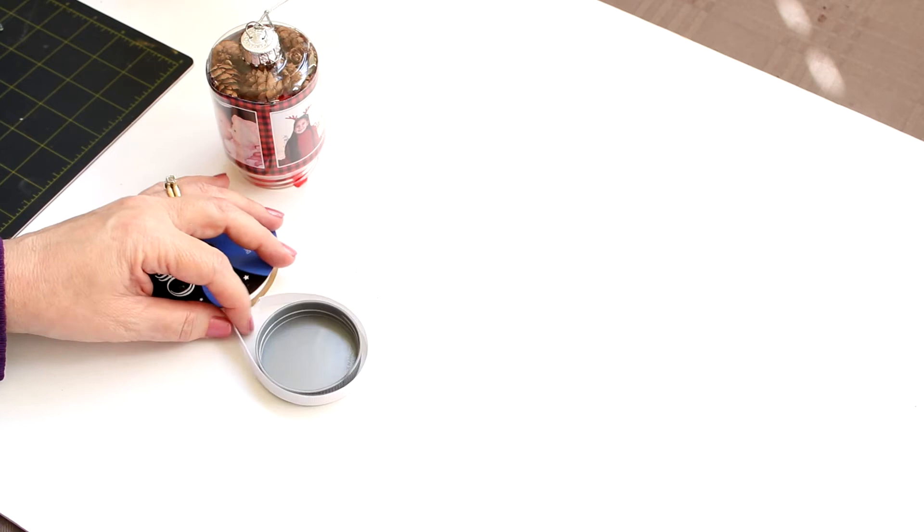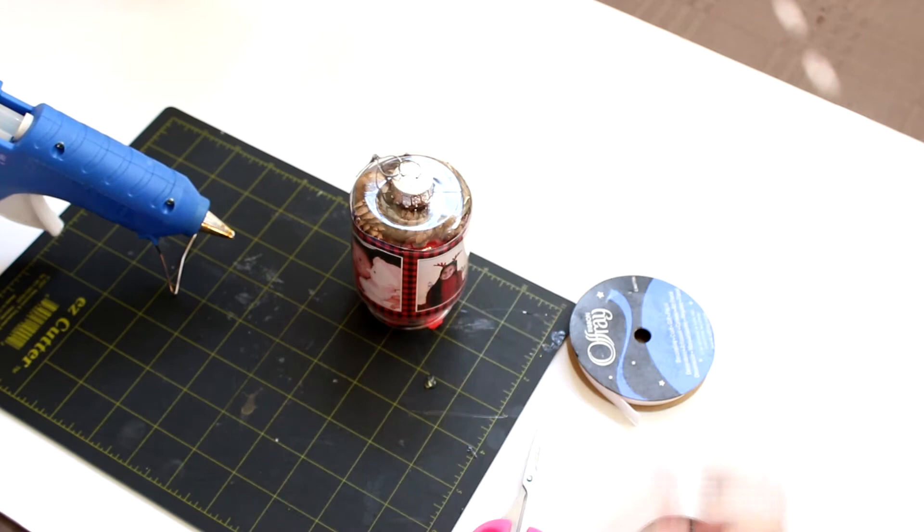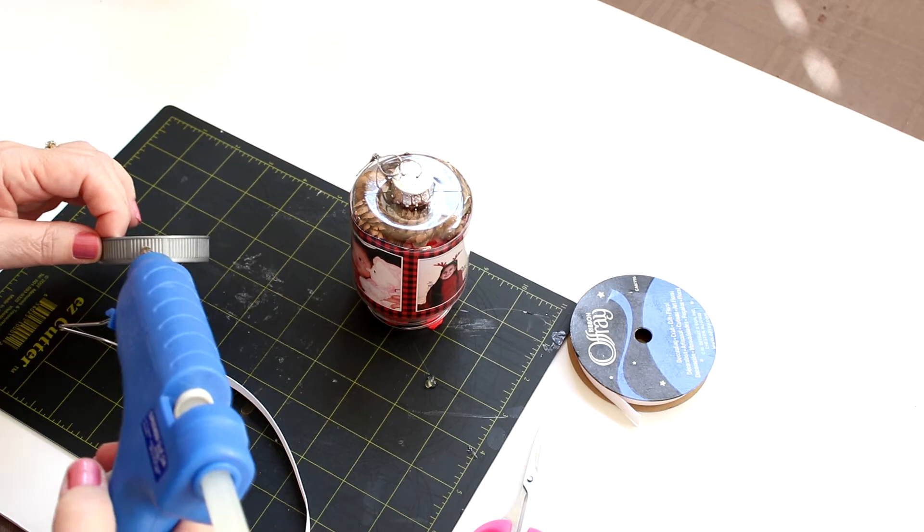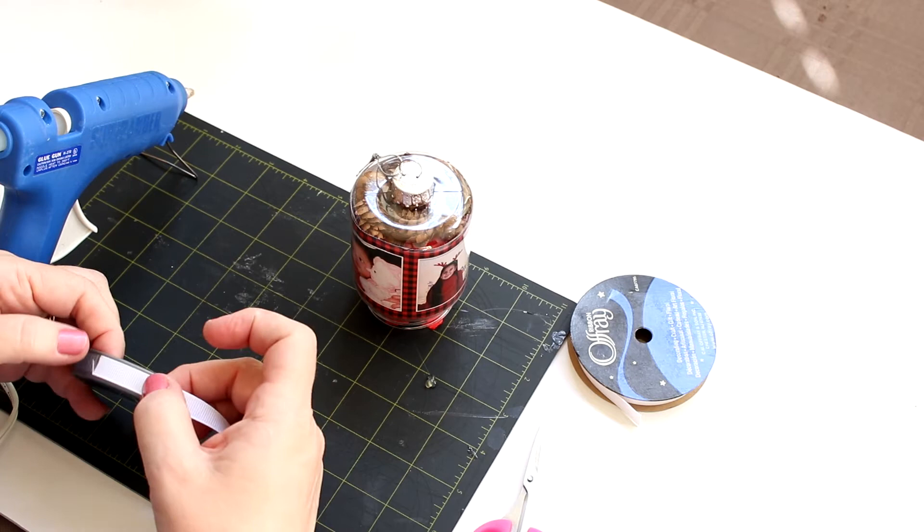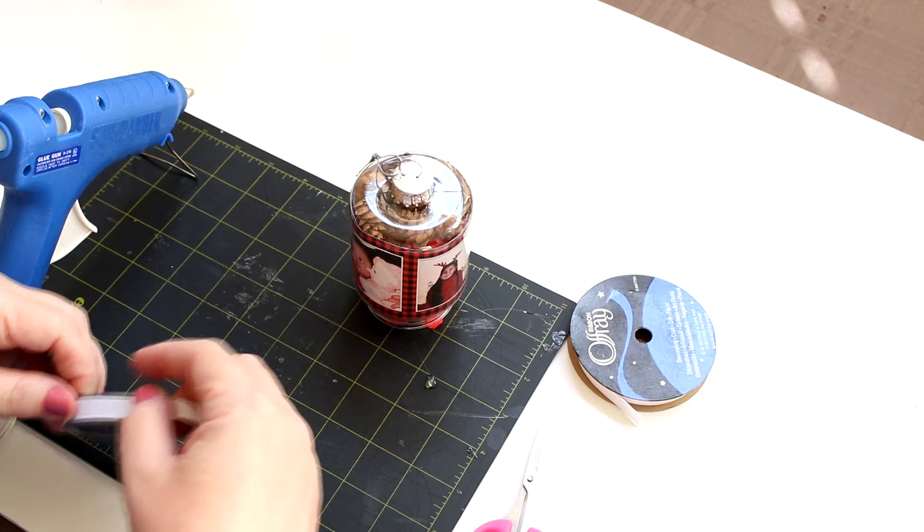So I'm just going to cut a piece of white ribbon here. I'm going to bring my glue gun into the shot. And I'm going to just put a little tab on here just to hold the ribbon in place just like that.